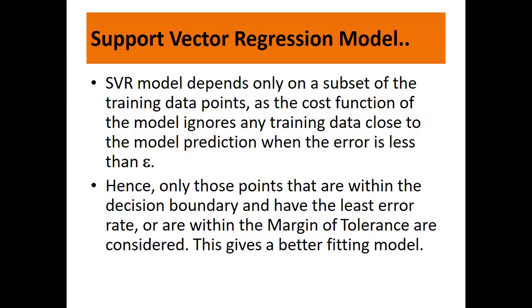A simple example: if dealing with stock trading and we want to minimize trading loss, we don't care about loss as long as they are less than a certain value, that is epsilon. The support vector regression model depends only on a subset of training data points, as the cost function ignores any training data close to the model prediction when the error is less than epsilon. Only points within the decision boundary with the least error rate are considered, giving a better fitting model.